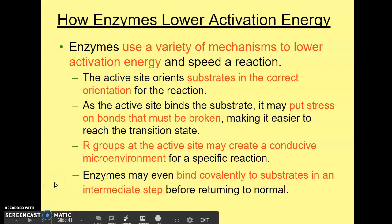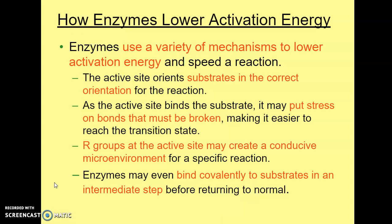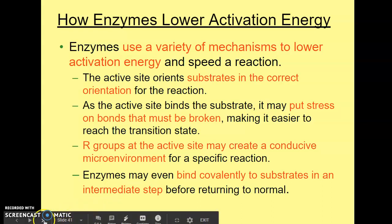Enzymes part three. We left off on how enzymes actually lower the activation energy. They use a variety of different ways to do that. One being that the active site will actually orient the substrate into the correct orientation for the reaction. As the active site binds to the substrate, it can put stress on some of the bonds that must be broken, making it easier to reach the unstable transition state. The R groups at the active site may also create a conducive environment for the specific reaction, and the enzymes combine covalently to the substrates in an intermediate step before returning to the normal reaction.